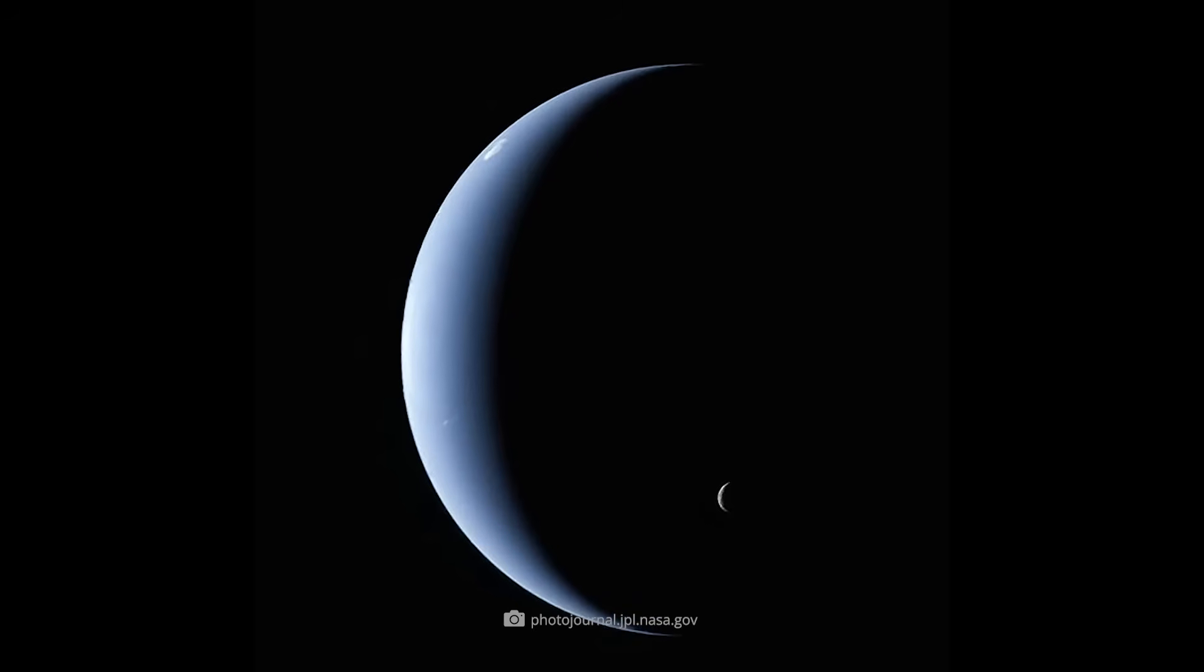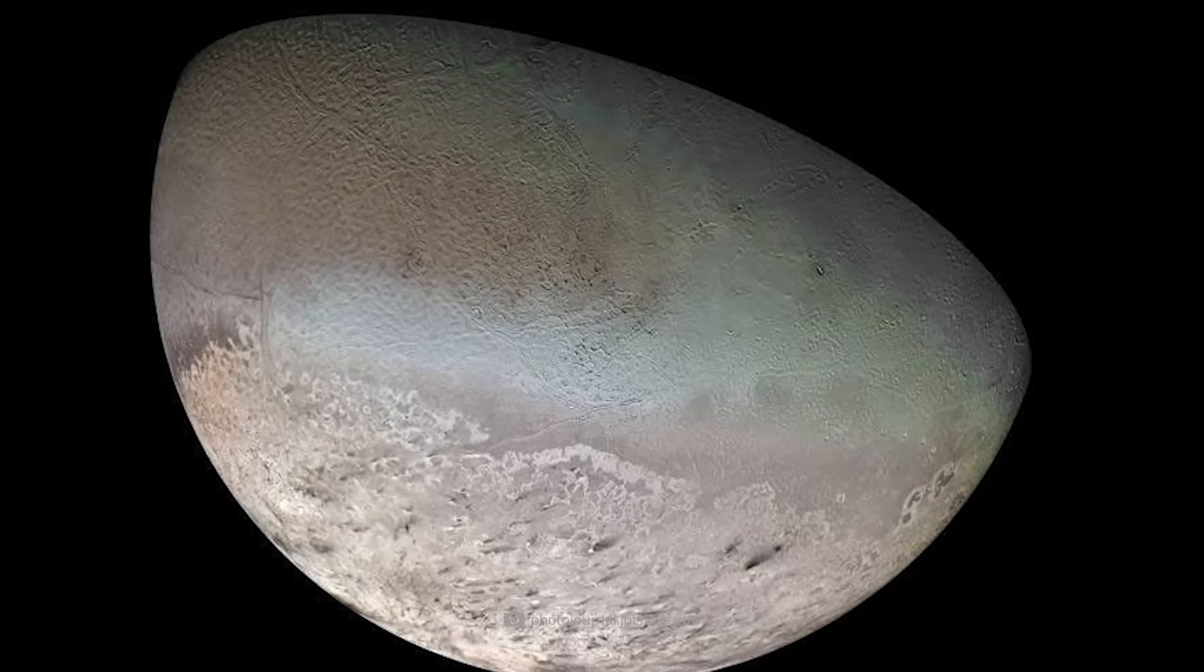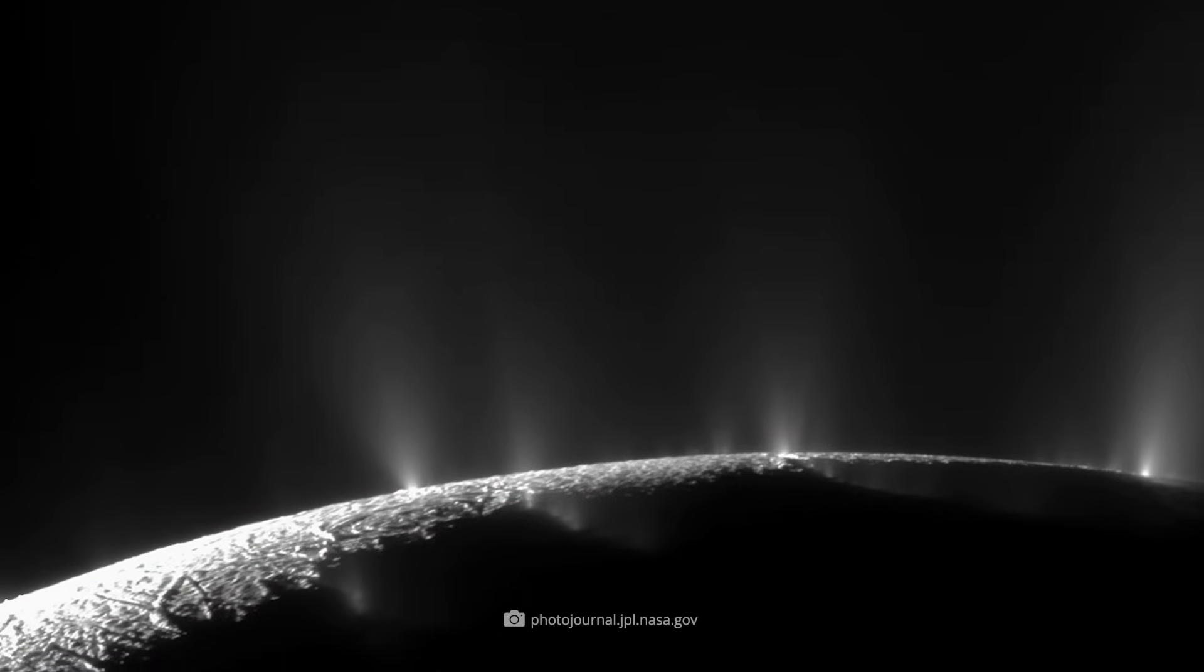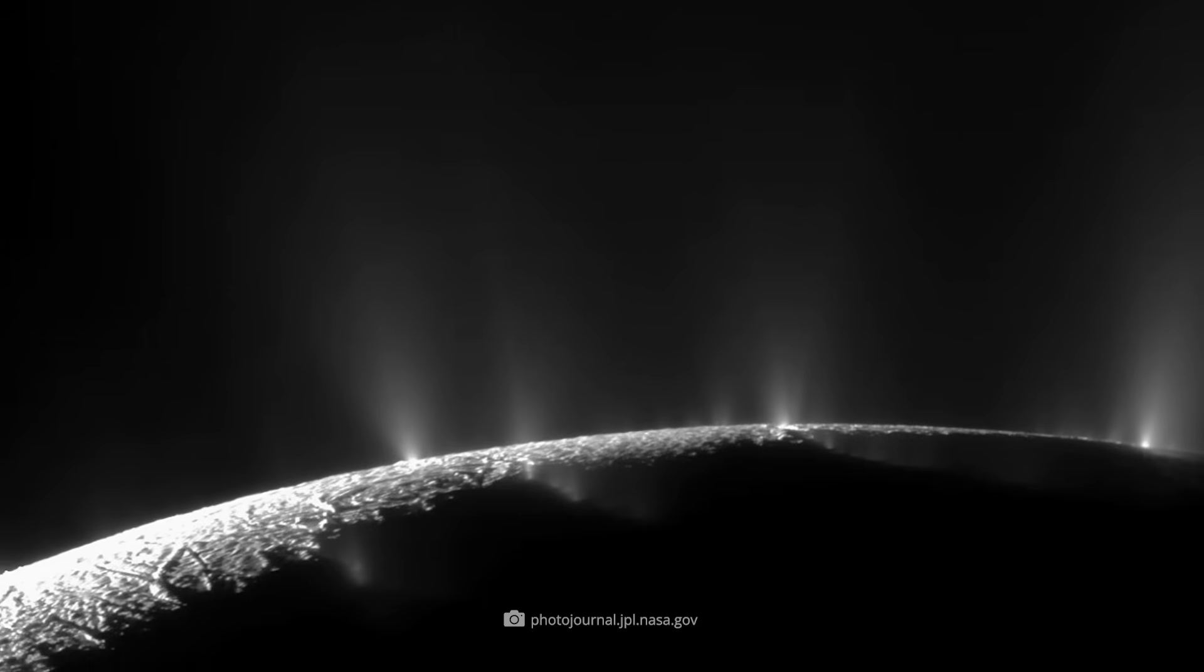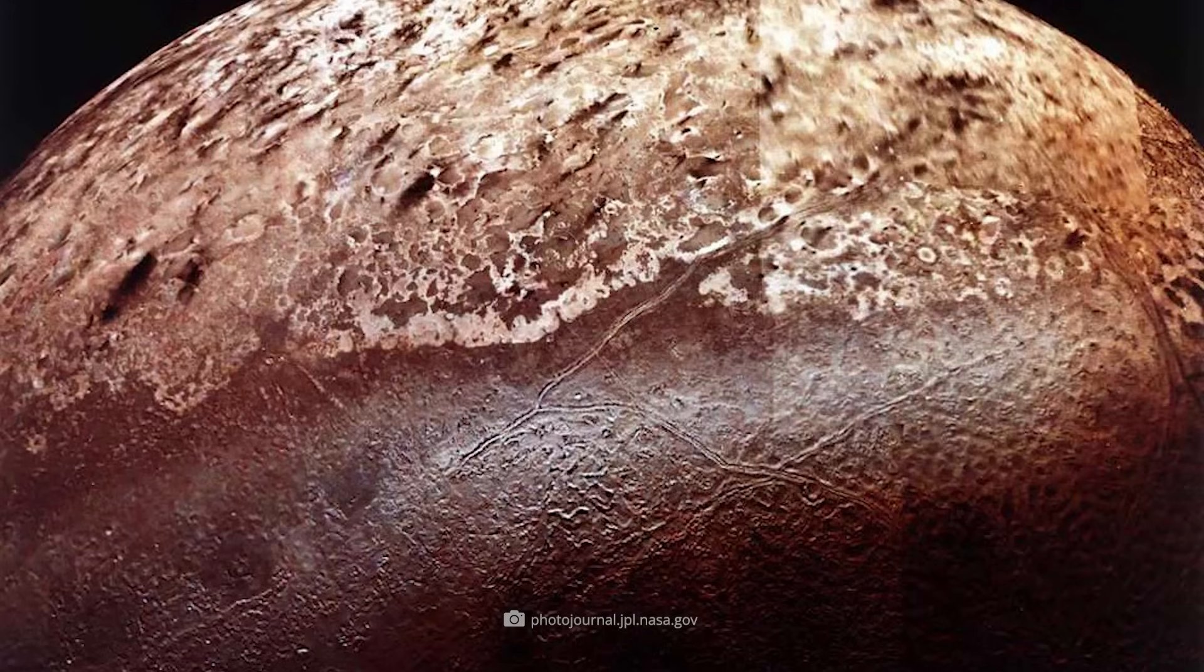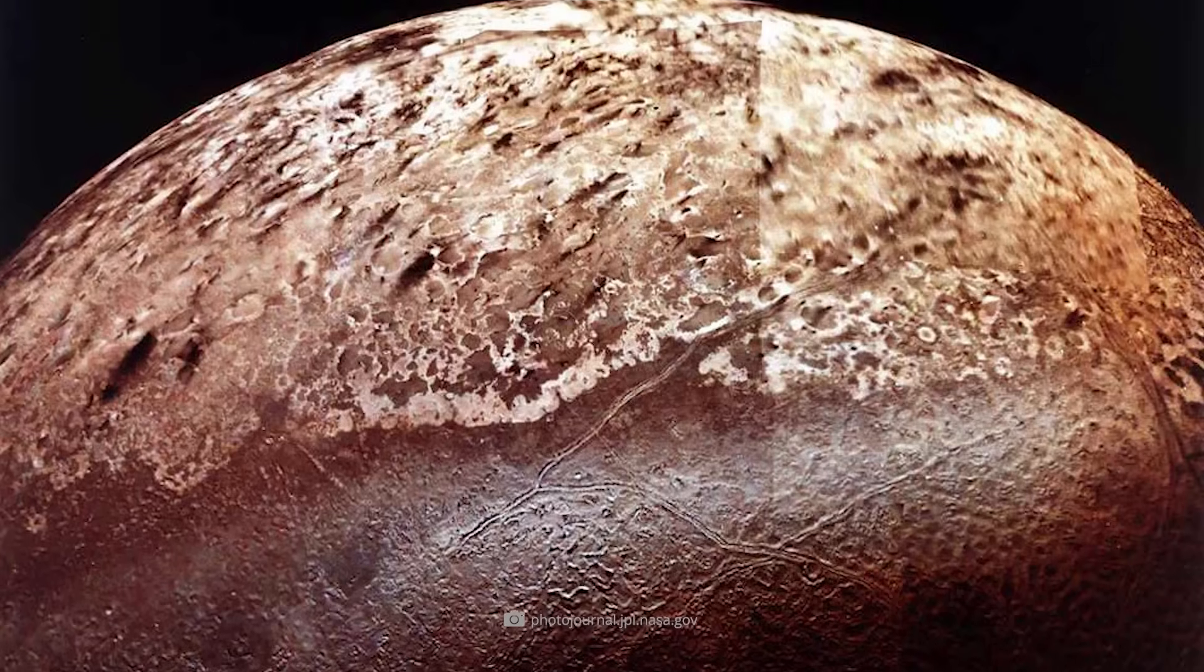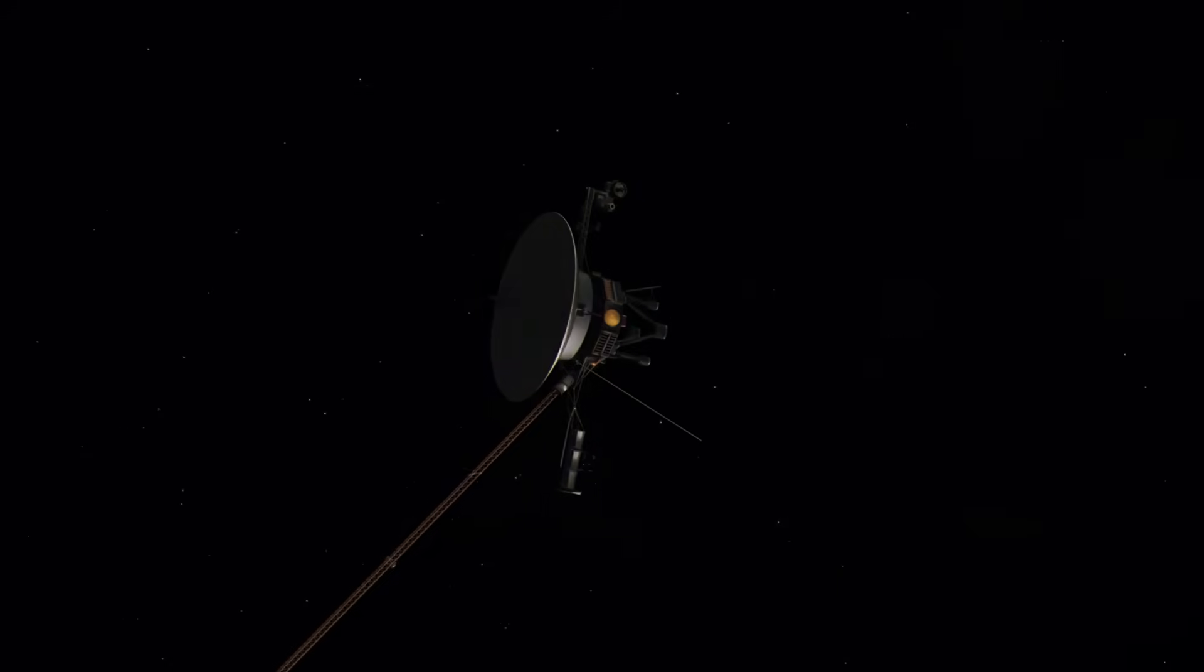However, one of the most exciting discoveries concerned the moon Triton. It moves in the opposite direction to Neptune's rotation and has a surface made of frozen nitrogen. Even more astonishing was the discovery of active geysers that spewed fountains of nitrogen gas several kilometers high. All in all, Triton, with a diameter of 2,700 kilometers, is by far Neptune's largest moon, accounting for 99.5% of the total mass surrounding the ice giant.